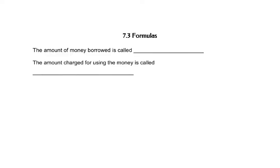So in this quick section, we'll look at some problems with formulas. First of all, let's talk about a couple vocabulary words. The amount of money that's borrowed is called principal. The amount of money charged for using that money is called the interest.